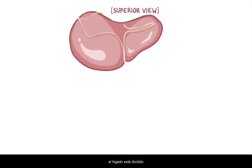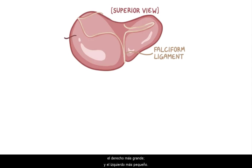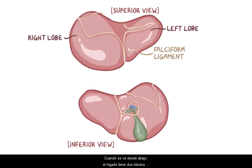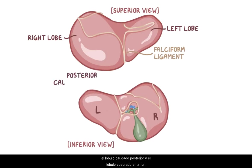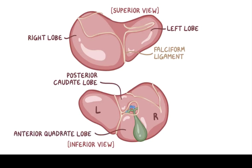Now, viewed from above, the liver is divided by the falciform ligament into two main lobes: the larger right lobe and the smaller left lobe. When viewed from below, the liver has two additional lobes between the right and the left lobe: the posterior caudate lobe and the anterior quadrate lobe.